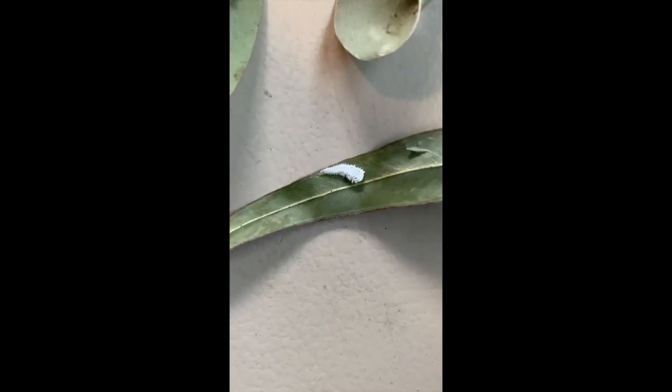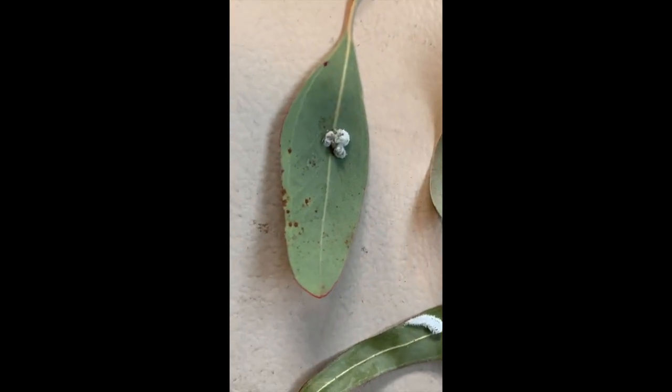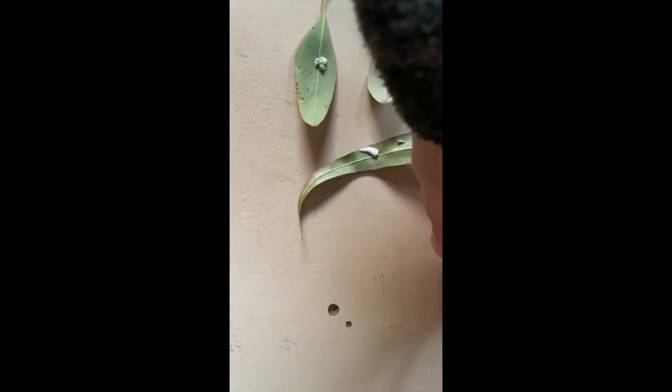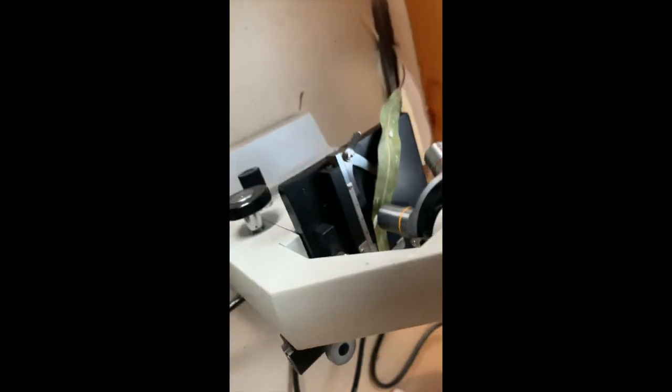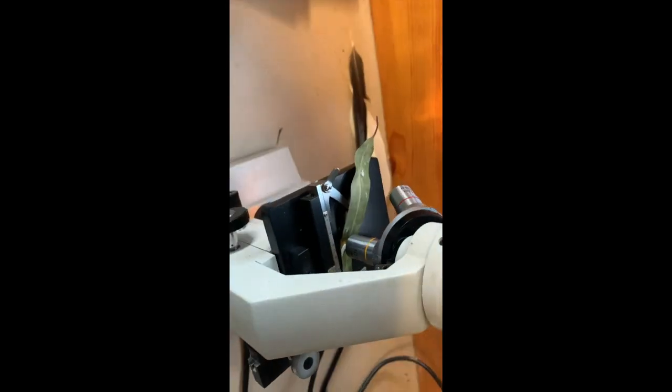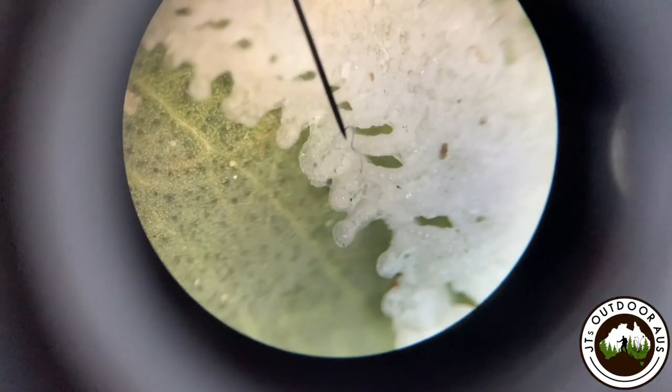Apologies for the vertical video guys. I forgot to turn it around but just demonstrating the three different types of lerp we have. One that sort of looks like a ladder, one that's got these fine sort of strings on the top and the larger shields. So we're just chucking them under this microscope and have a look.